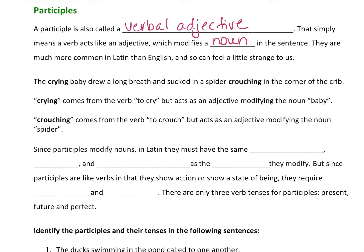Let's look at this first sentence: 'The crying baby drew a long breath and sucked in a spider crouching in the corner of the crib.' The word 'crying' comes from the verb 'to cry' — someone can be crying — but here it acts like an adjective modifying the noun 'baby.' It describes the baby. The word 'crouching' comes from the verb 'to crouch,' but it acts as an adjective modifying the noun 'spider.'